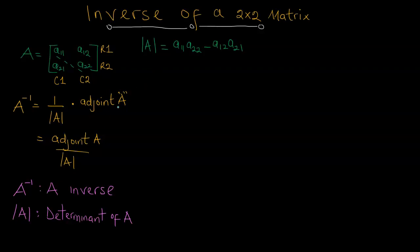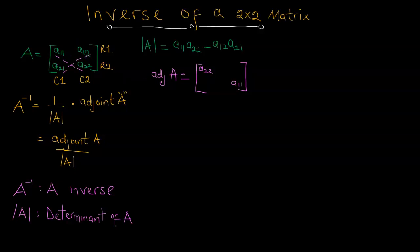The next thing is going to be the adjoint. To obtain the adjoint of A, we focus on the same matrix. We identify the elements on the leading diagonal and flip them. So we've got A11 and A22 on the leading diagonal — flipping gives A22 and A11. On the other diagonal, we multiply each element by negative one: A12 becomes negative A12, and A21 becomes negative A21. This is the adjoint of matrix A.